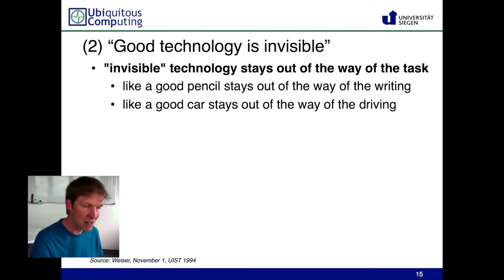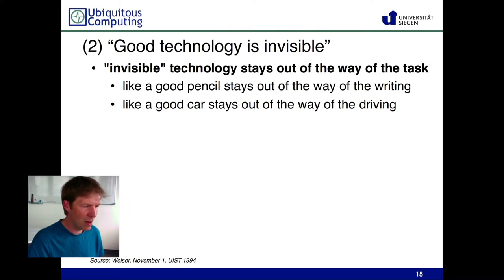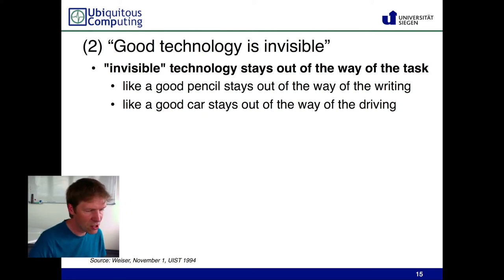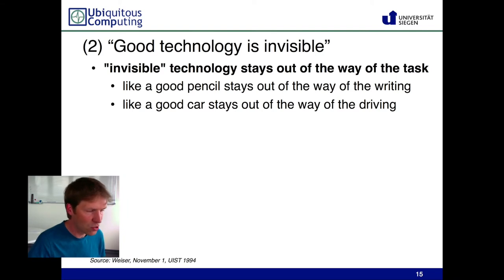There are several examples, like a pencil. If you're writing with a pencil, you're usually thinking about the words you're about to write, not about how you hold the pencil or how to use it. The technology is known to you and you use it without thinking about it. The same goes for a car: if you're driving, you're usually not thinking about which buttons to press, how to use the steering wheel, or how to shift gears. You're thinking about how you're driving, who to avoid, and where to go — those are your primary tasks, not the technology.